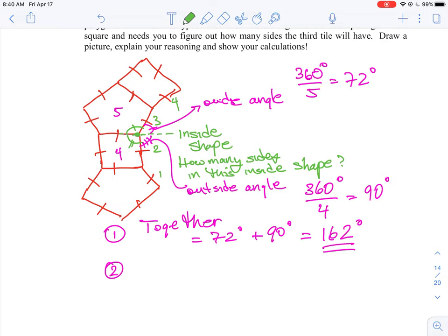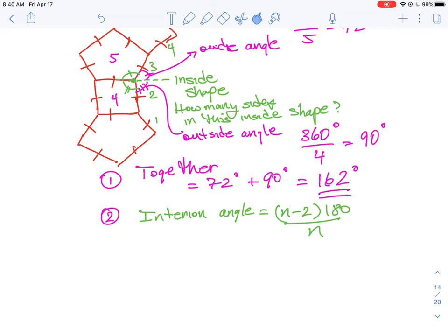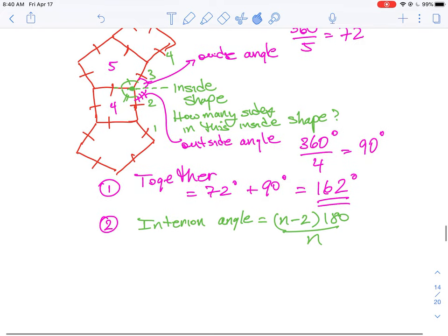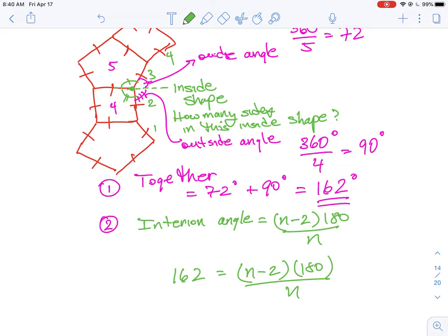We know that the interior angles of a polygon is equal to a different formula: it's equal to (n - 2) times 180 all over n. If we know what that interior angle is then we could substitute and calculate what that value should be. Our interior angle is going to be equal to that outside angle so it's 162, and that's equal to (n - 2) times 180 all over n.